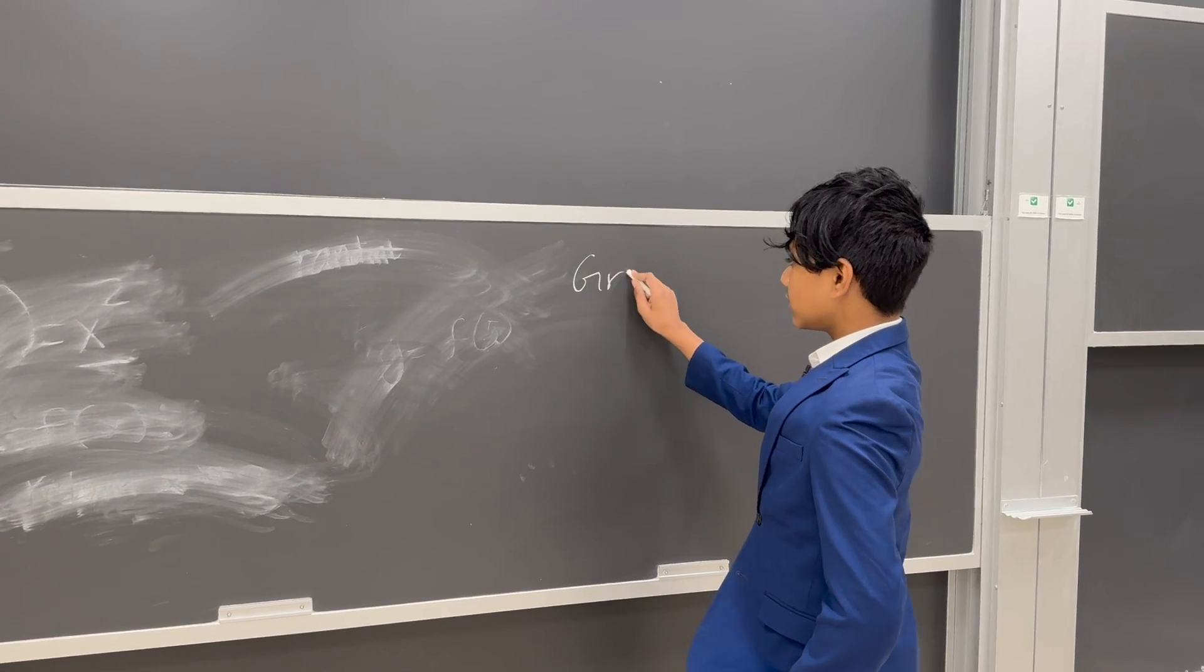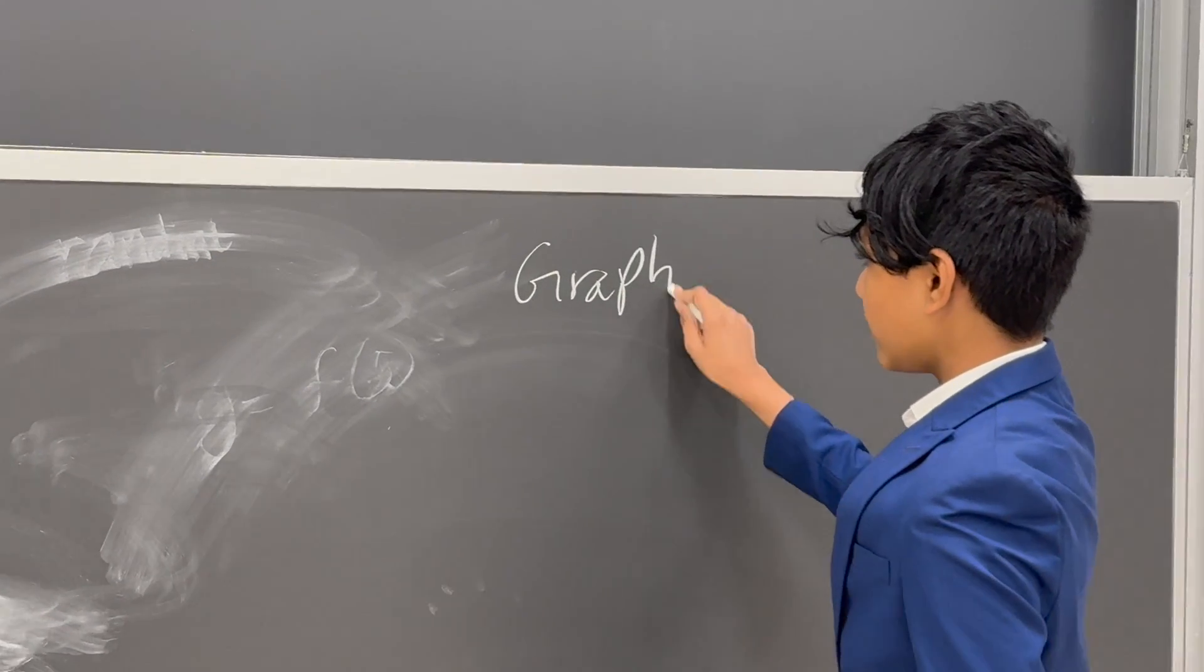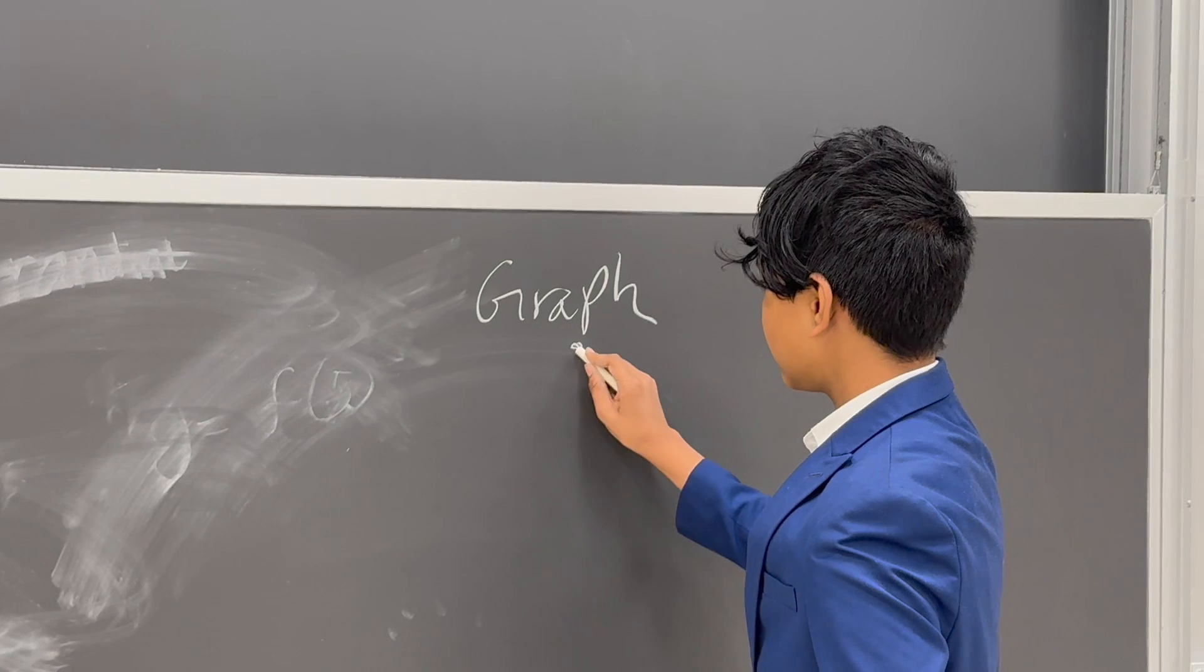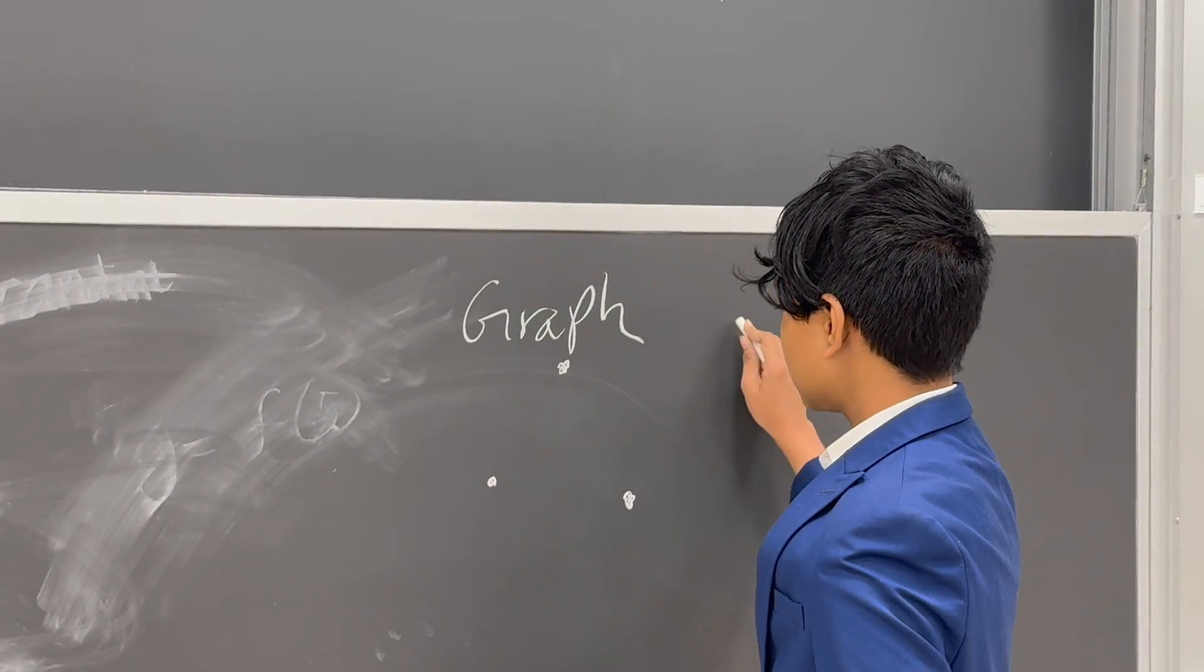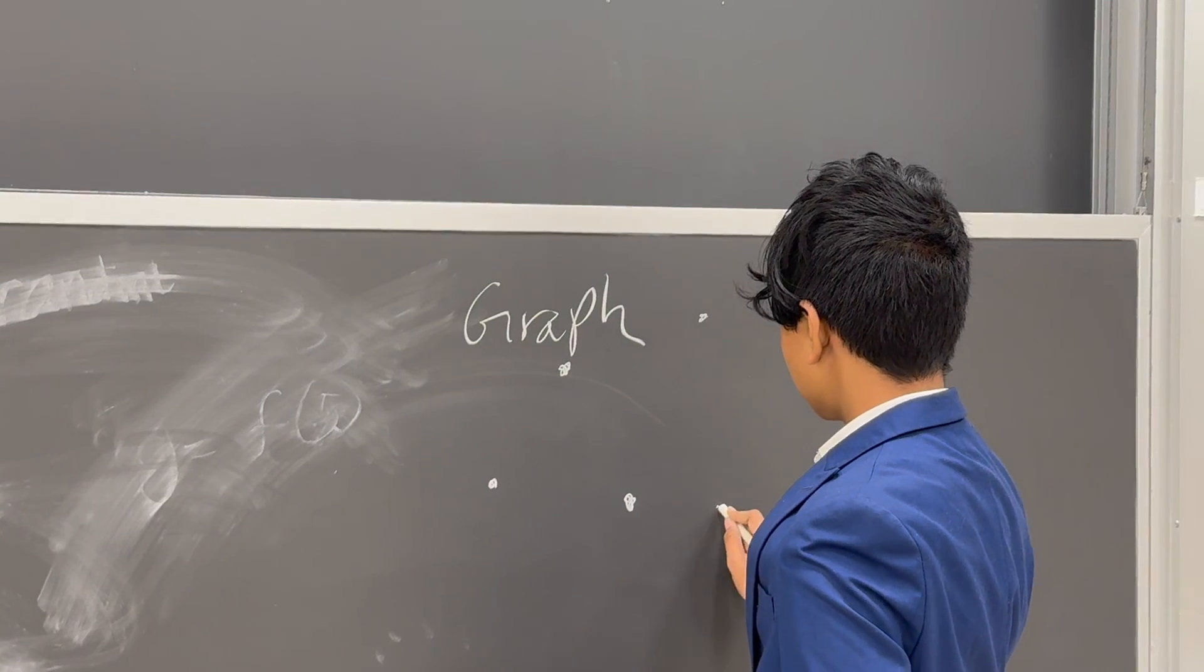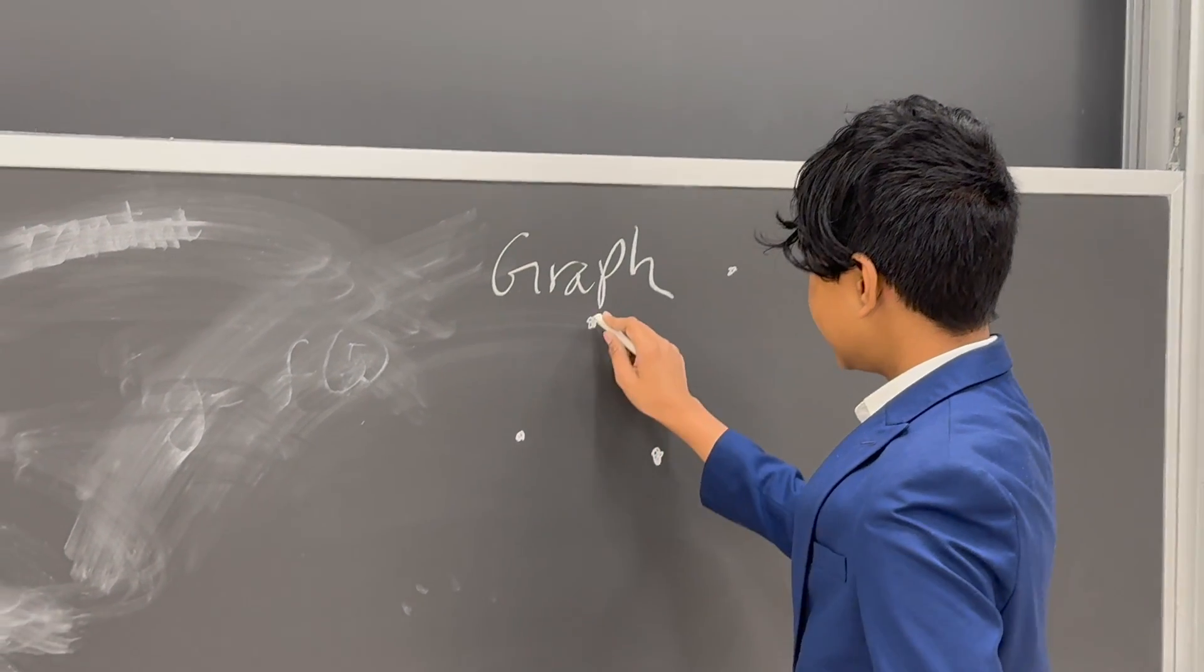Basically, it's just an extension of a graph. When you think about a graph, you think about a set of points, or dots, or nodes, whatever you want to call them, and edges.